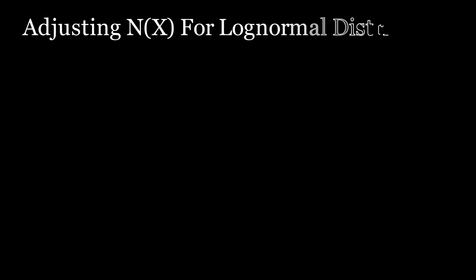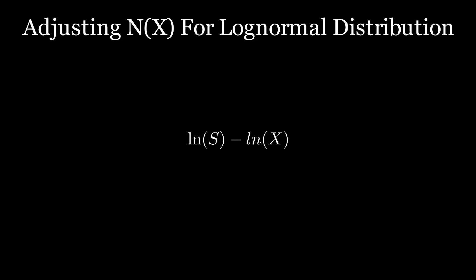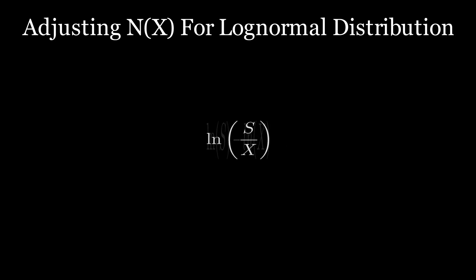In Black-Scholes, the relationship between the strike price and stock price is key. For a normal distribution, this is straightforward — it's just the stock price S minus the strike price X. But in a log-normal distribution, we have to adjust by taking the logarithm, giving us the natural logarithm of S over X. If S is greater than X, this value is positive and the call is in the money; if S is less than X, the value is negative and the call is out of the money.